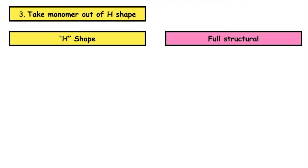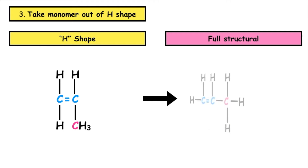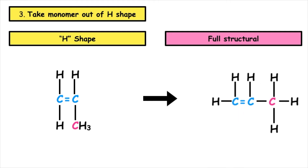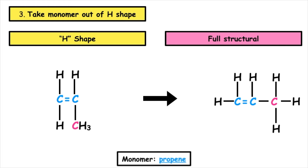We then want to take the monomer out of the H shape. This is where we highlight the carbon-to-carbon double bond, and then we bond any branches up to form a straight-chained alkene. When we do this, we get the full structural formula, and the monomer name of this particular example is propene.